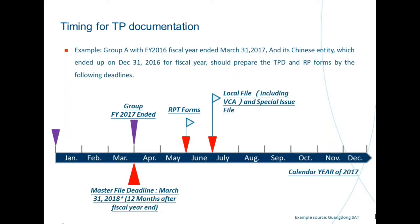One practical comment: the local TP file needs to be made available upon request after the end of June when we talk about the FY2016 local transfer pricing file to the Chinese tax inspector. However, we understand they are going to be flexible on the value chain analysis component. They have been very explicit in saying that this VCA requirement is new for the first time, so they are not going to hold you strictly to it if they ask for your local file by 1st July. The VCA might not look that elaborate yet. It is not an excuse for delay, but it gives the notion that they are cautious as well, since it is the first time they ask for a value chain analysis to be included in the local transfer pricing file.